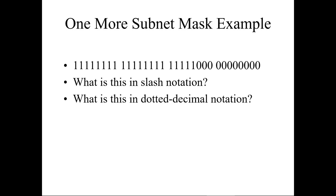Let's look at one more example — the slash notation: 8, 8, then 17, 18, 19, 20, 21. So the slash notation would be /21. In dotted decimal form, here's 8 bits, here's 8 bits, so that's 255.255 — then 128+64+32+16+8. We do not add the 4, 2, or 1, so this should be 248. So 255.255.248.0.